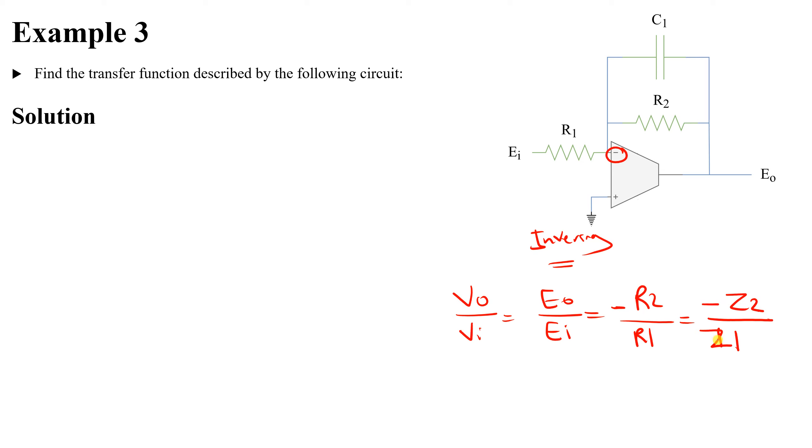So let's type it: E out over E input would be negative Z2 over Z1.